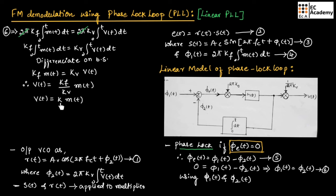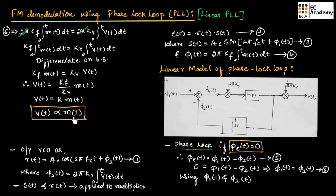From the above equation, we can say that the output of the phase locked loop is directly proportional to the message signal M(t). Here H(t) represents the low pass filter and its output V(t) is directly proportional to M(t). So we can recover the message signal M(t) using the linear model of the phase locked loop — the message signal is recovered by demodulating the FM signal. This is FM demodulation using phase locked loop. Hope you have understood the topic. Thank you.